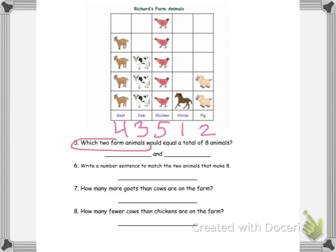It says which two farm animals. So I'm not going to write three and five. I'm going to write the actual animals so we know that it was cows and chickens. That says write a number sentence to match the two animals that make eight. So it was three plus five equals eight.